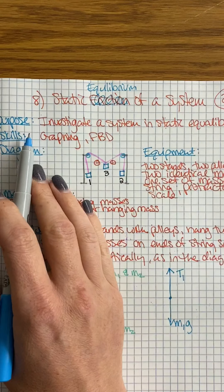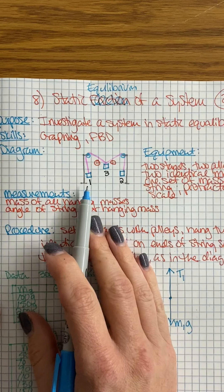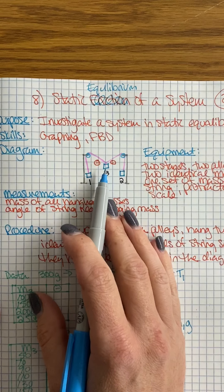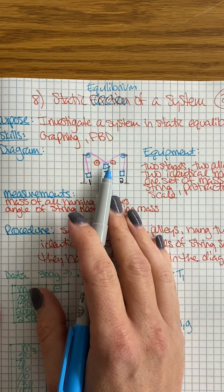We're going to investigate this system. We have three masses: one, two—they're of equal mass—and three, which we're going to change and monitor what happens to our angle.